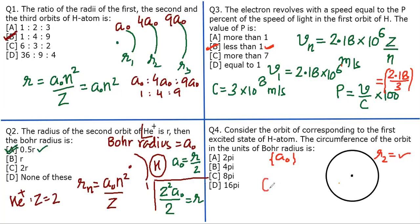So let's do that. We know that r₂ from the first question we have done, it is a₀n². So for the first excited state, student should do this clearly: first excited state means n is equal to 2, right? So it is 4a₀.